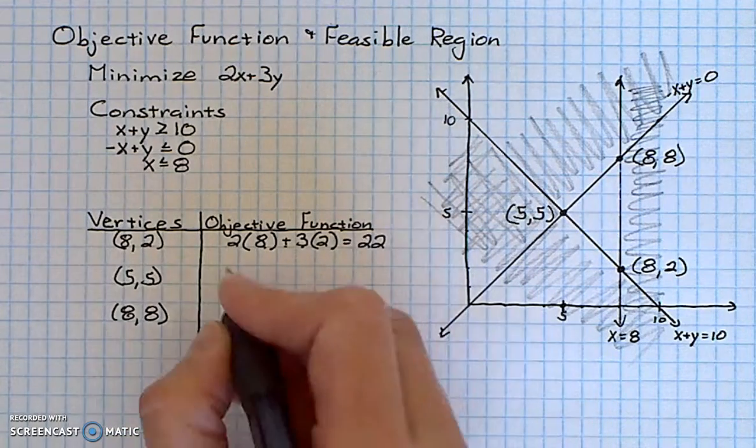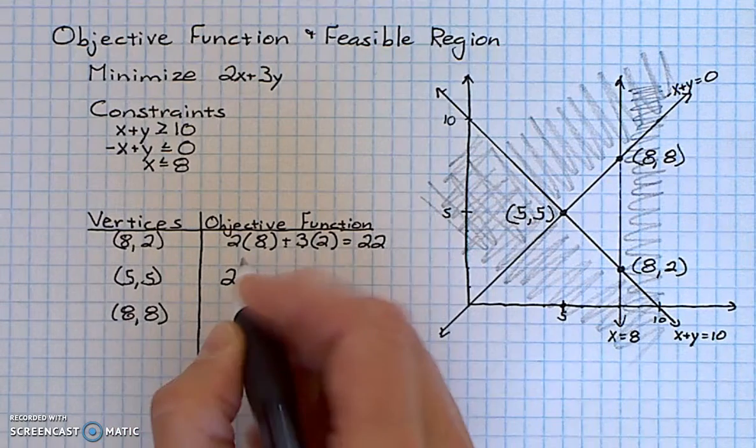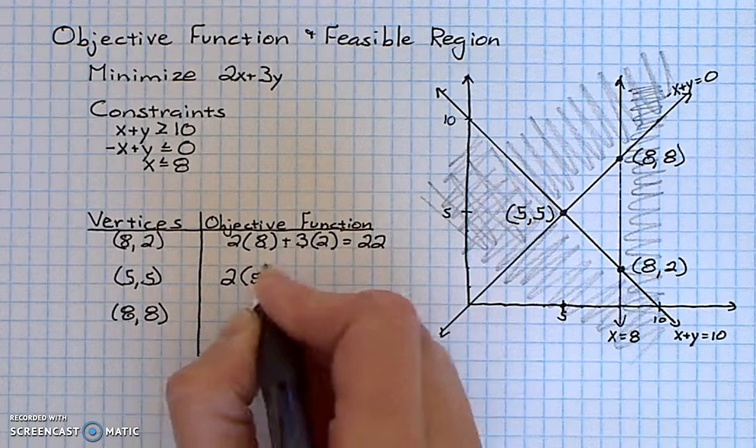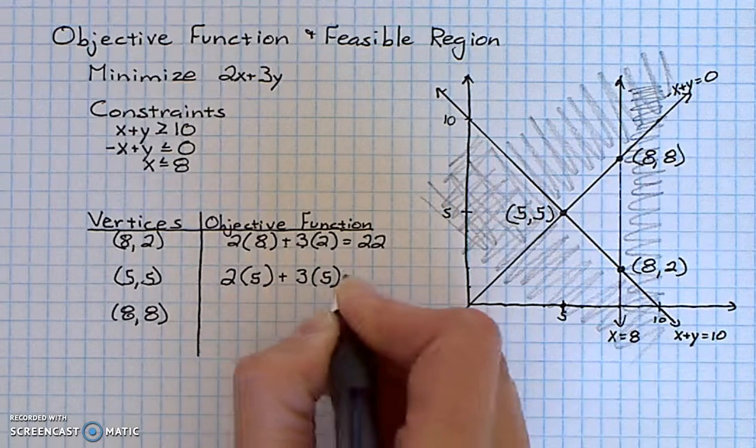I take the same objective function and this time substitute 5 and 5 in. 2 times 5 plus 3 times 5. That is 25.